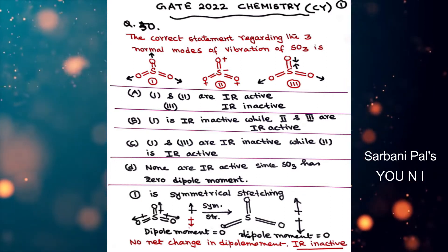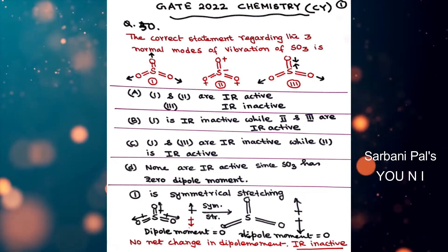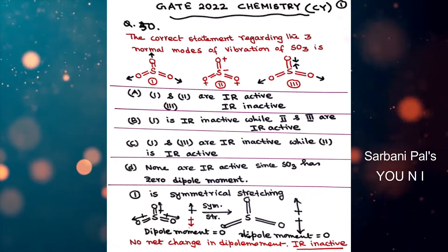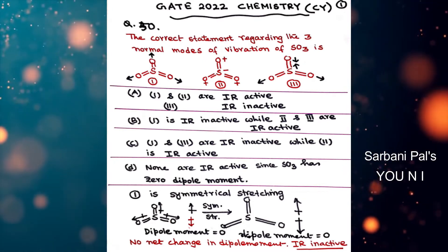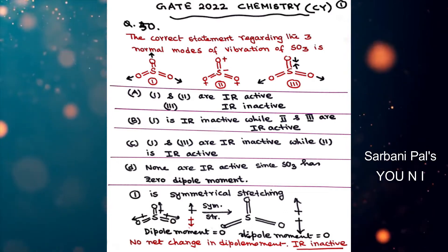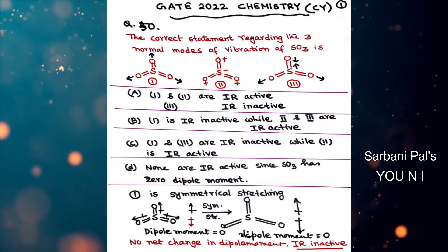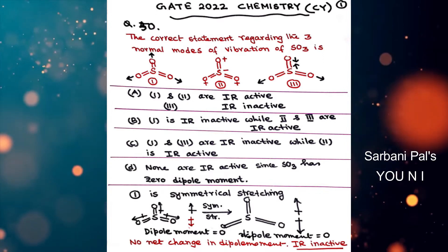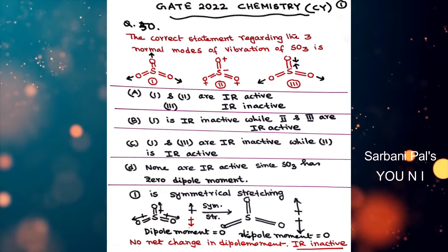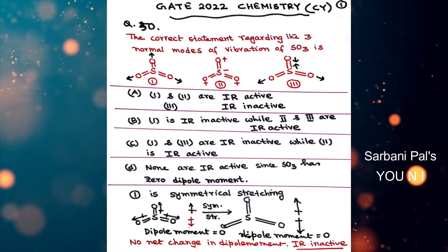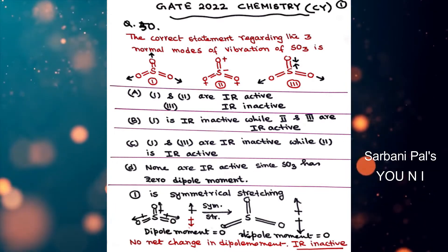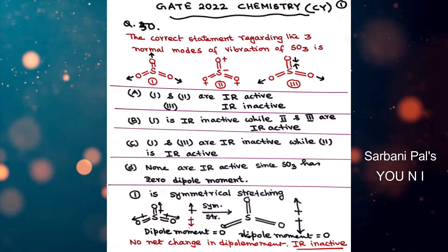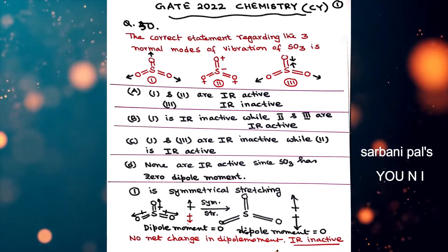Structure 1 of sulphur trioxide represents symmetrical stretching. As we investigate structure 1, it is clear that all three bonds are increasing in bond length. Sulphur trioxide is a non-polar molecule with dipole moment 0. After symmetrical stretching, the dipole moment remains 0. Hence there is no net change in dipole moment during symmetrical stretching, so structure 1 is IR inactive.